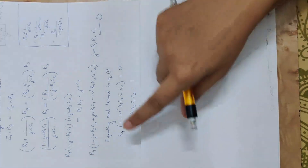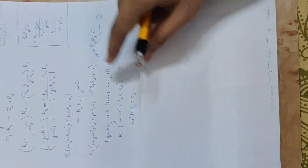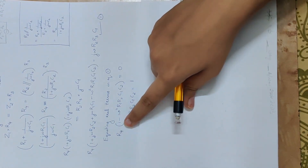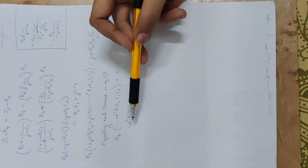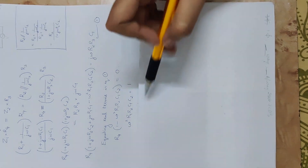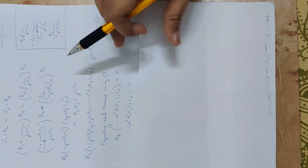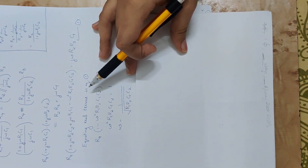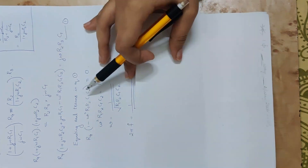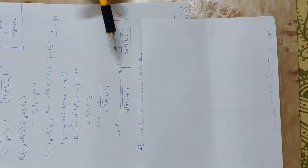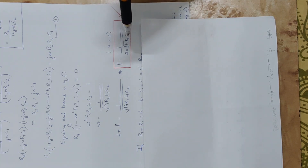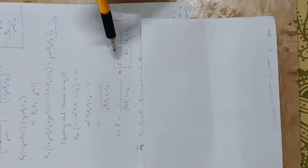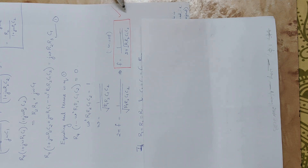Cancelling R4, we get 1 − ω²R1R2C1C2 = 0, so ω² = 1/(R1R2C1C2). This is the frequency of oscillation. Since ω = 2πf, the frequency of oscillation is f = 1 / (2π × √(R1R2C1C2)).